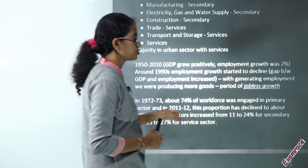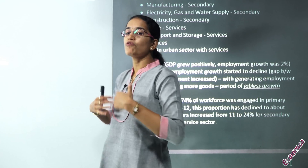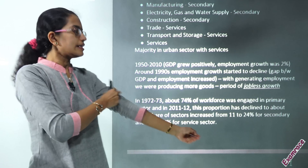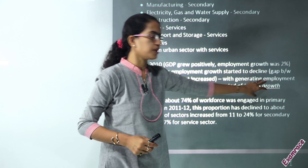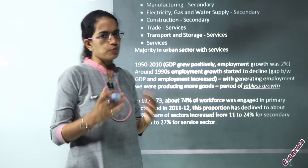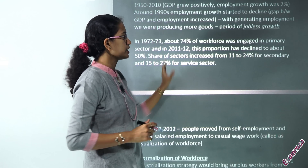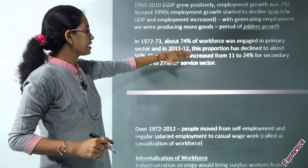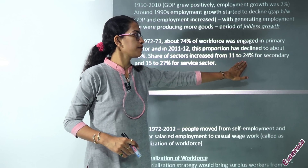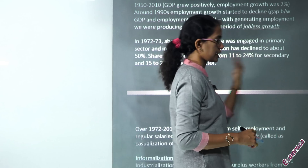Jobless growth became a real issue of concern. Similarly, in the era of Industry 4.0 and automation, we again see jobless growth. That is one of the major focuses — identifying where employment opportunities could be generated. The share of agriculture in the workforce has declined from 74 percent to 50 percent, while the secondary sector increased from 11 to 24 percent and the service sector from 15 to 27 percent.